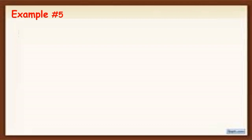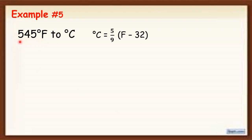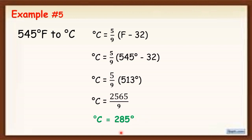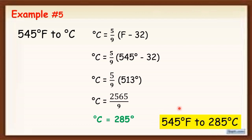Example 5: Convert 545 degrees Fahrenheit to degrees Celsius. Using the formula C = 5/9 × (F − 32), substitute F = 545. Simplify inside the parentheses first: 545 − 32 = 513. Bring down 5/9, then multiply 5 × 513 = 2,565, giving 2,565/9. Divide 2,565 by 9 — the final answer is 285 degrees. Therefore, 545 degrees Fahrenheit is equal to 285 degrees Celsius.